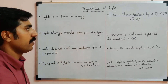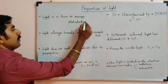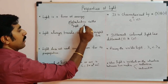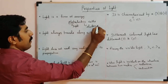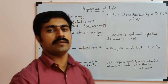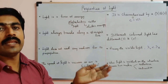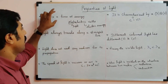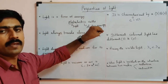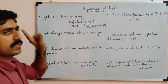Light is a form of energy. If you use photoelectric cells, light energy can be converted into electrical energy — that is, electric current. So photoelectric cells are used to produce electric energy from light energy. That is the first property of light.